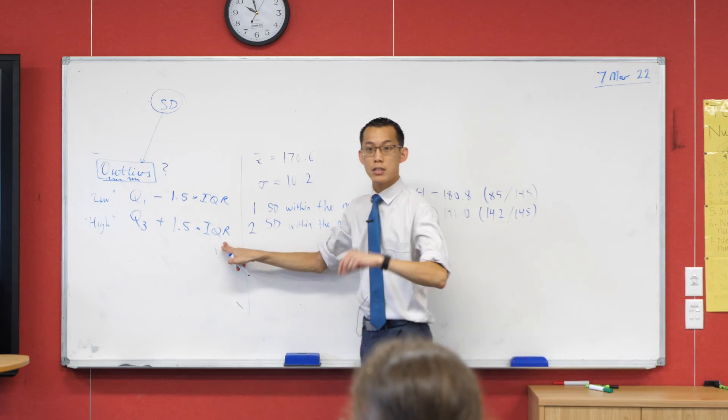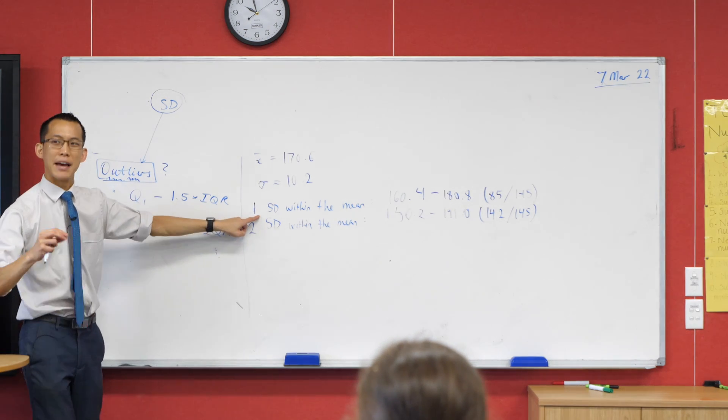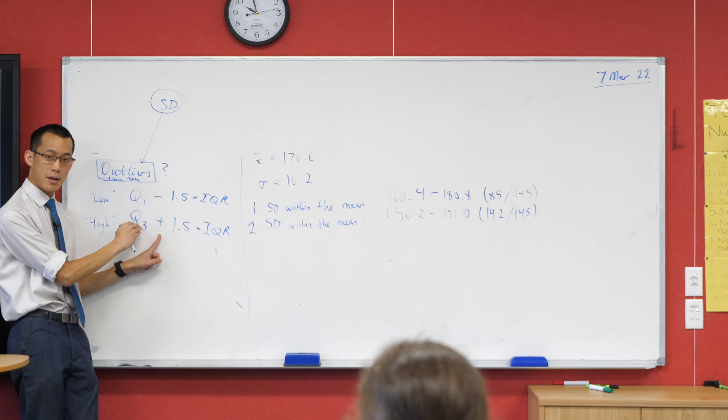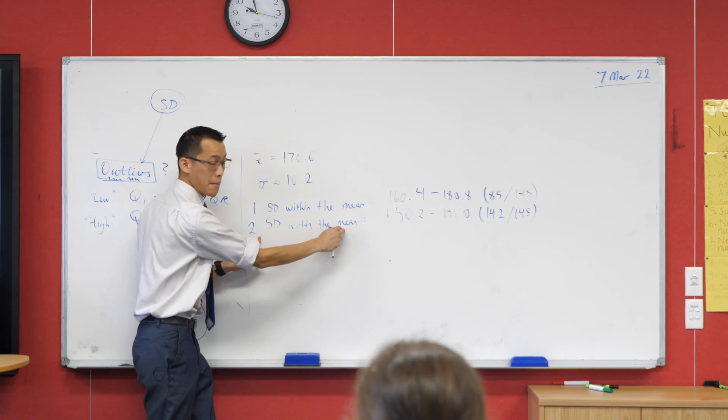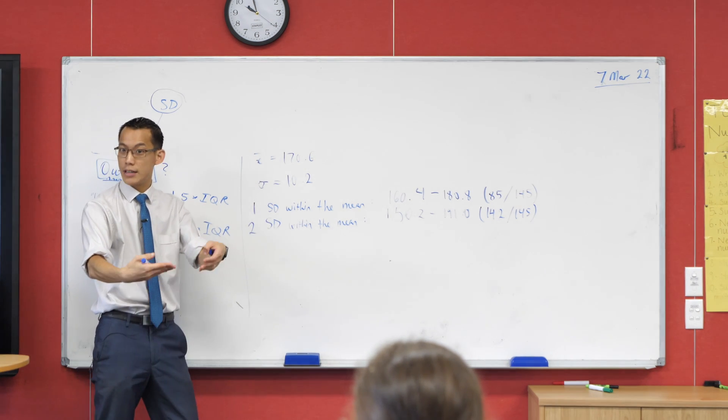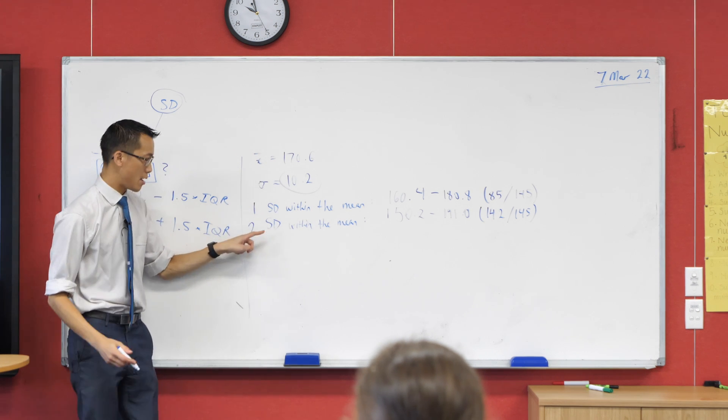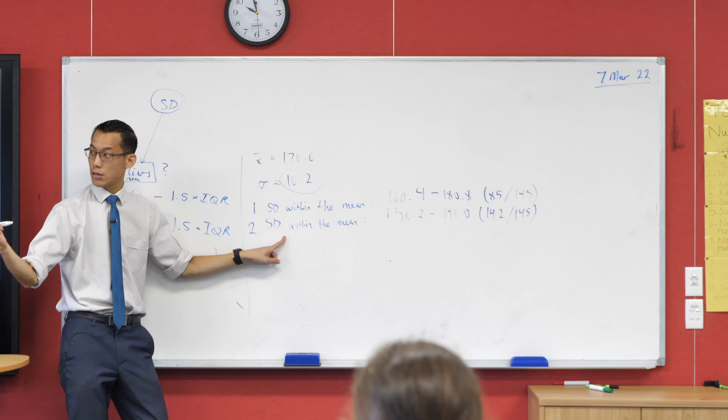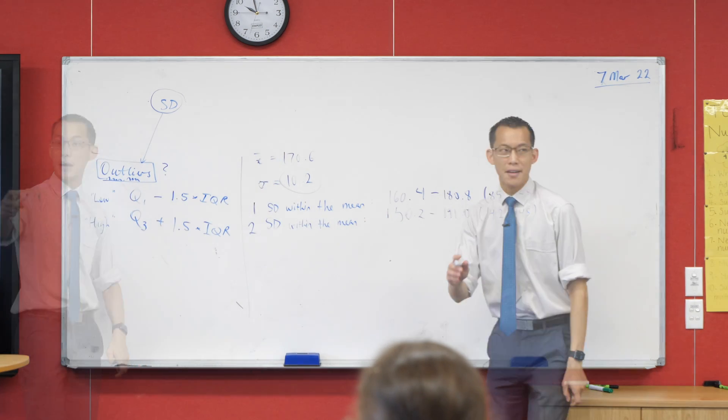In much the same way that we used interquartile range as a measure of spread, standard deviation is just like a better measure of spread, more accurate one. So in much the same way that here, I went from a number and then I added the interquartile range. Here, I'm going from the mean in both cases, and I'm adding some number of standard deviations. In this case, I added one of them, which took me up to 180.8 from here. In this case, I added two of them, which took me higher. Sorry for the bad marker, okay?